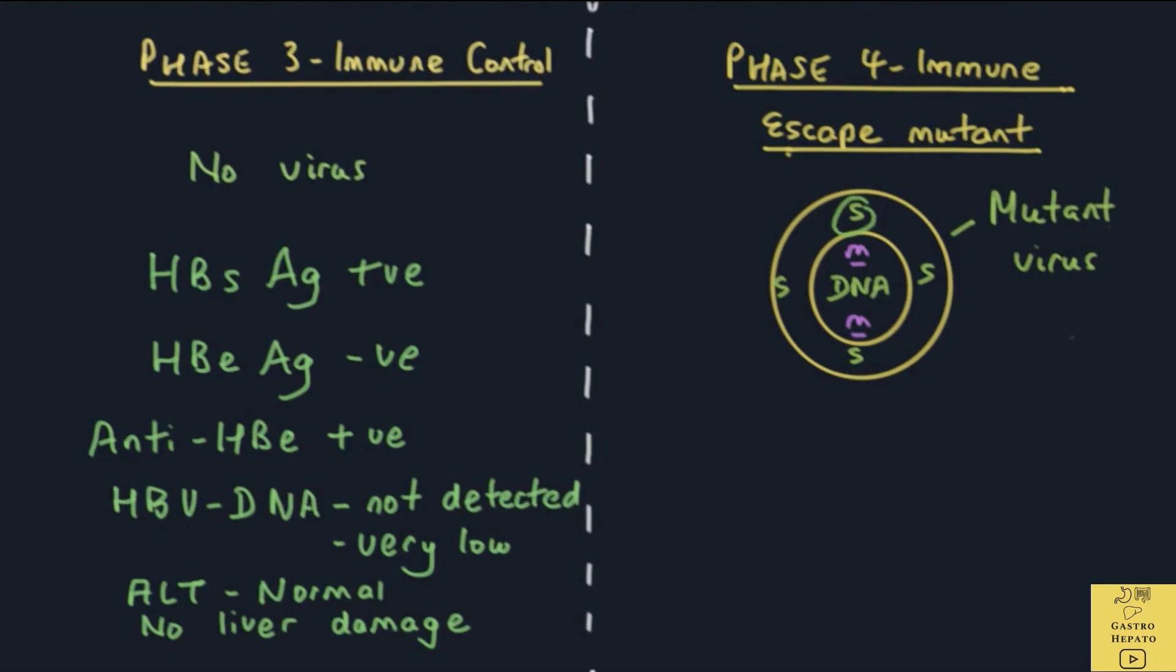In Phase 4, the blood test will show that the HBs antigen is positive, the HBe antigen is negative, the HBV DNA levels are high, the liver enzyme ALT is high, indicating liver damage.